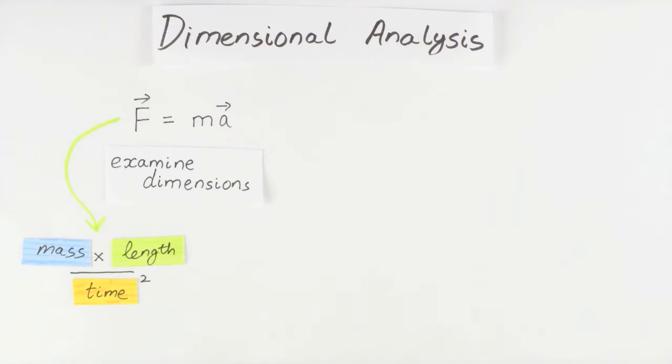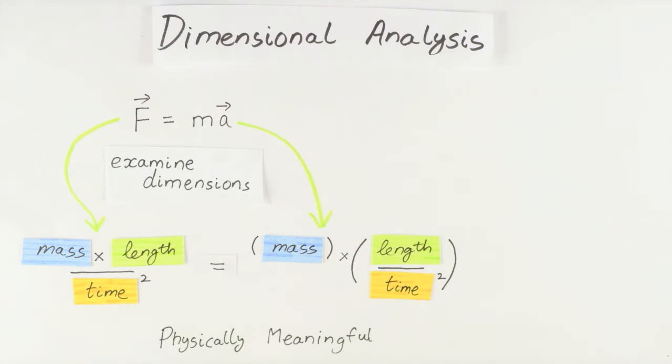the dimensions of the left and the right-hand sides of the equations we use to obtain our answer. Physically meaningful equations must have the same dimensions on both sides, so dimensional analysis can help us determine whether we've made some kind of mistake in our work.